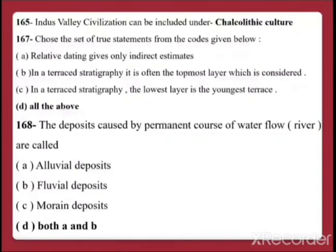Question 168: The deposits caused by permanent course of water flow, that is a river, are called — A. Alluvial deposits, B. Fluvial deposits, C. Moraine deposits, D. Both A and B. The answer is D — both alluvial and fluvial deposits, as sediments that accumulate due to river flow are referred to by both terms.